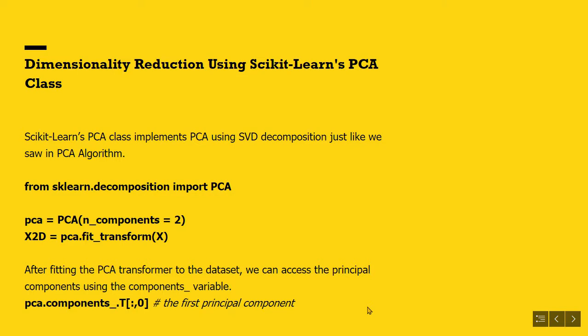Now let's talk about dimensionality reduction using scikit-learn's PCA class. As we have seen, there is much complex procedure involved in finding principal components. Luckily, we don't need to go through all these procedures to apply PCA to reduce the dimensions of our dataset. Because we have a scikit-learn PCA class that already implemented these algorithmic procedures of PCA for us. The PCA class implements PCA using SVD decomposition, just like we saw earlier in the algorithm. Here the following code applies PCA to reduce the dimensionality of the dataset down to two dimensions. Note that the class automatically takes care of centering the dataset. After fitting the PCA transformer to the dataset, we can access the principal components using the components variable.